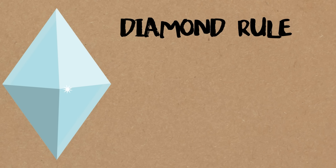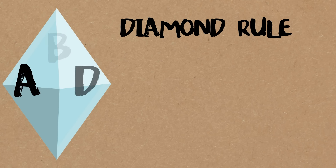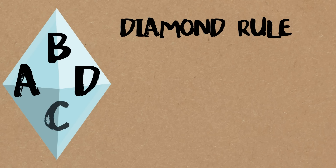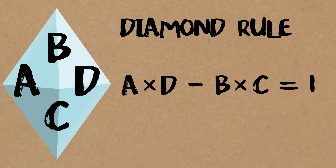Namely, whenever I have a diamond — something in this shape — I call the four entries A, D, B, C. Then they have to satisfy A times D minus B times C equals 1. Every diamond you make must satisfy this rule.